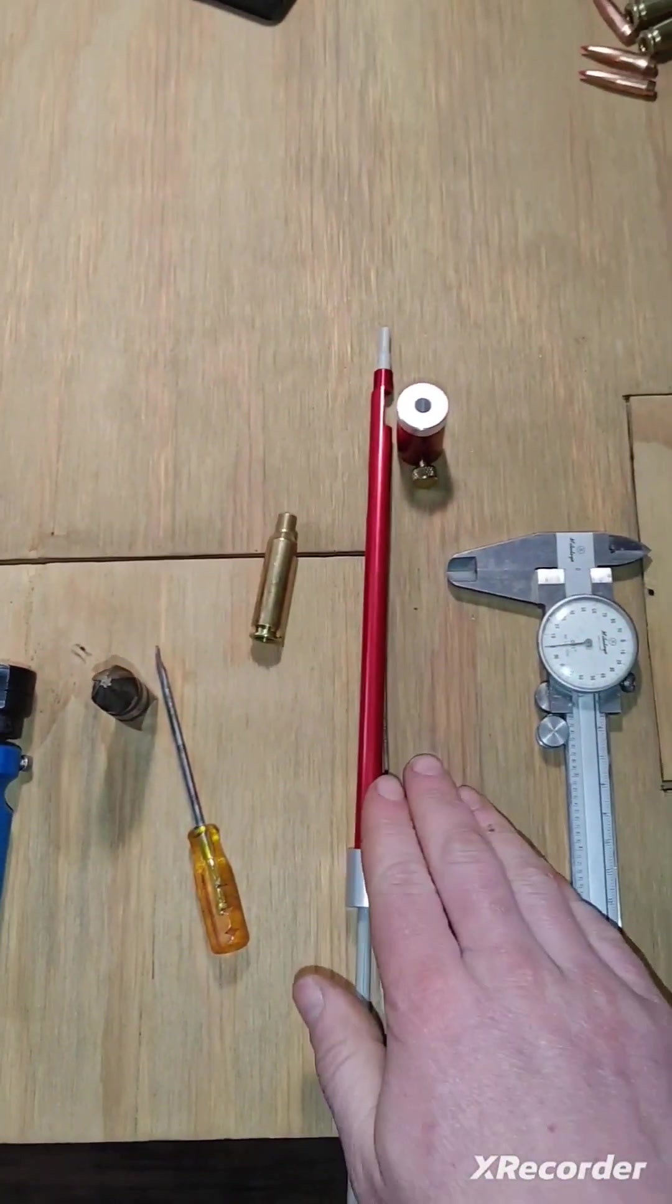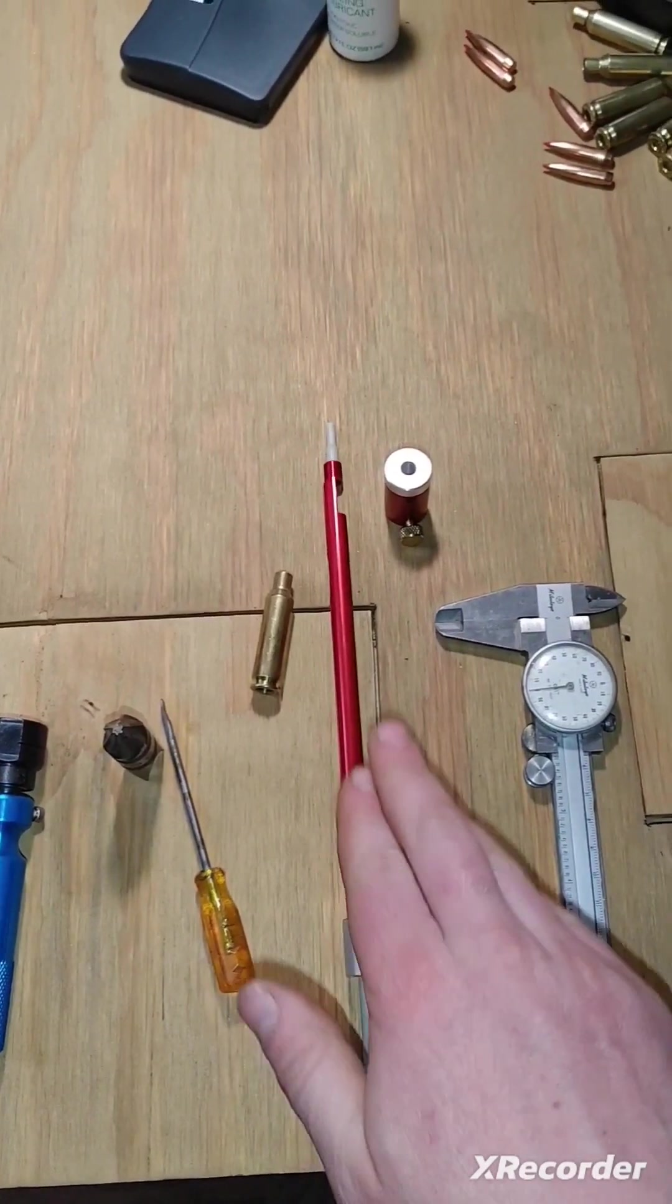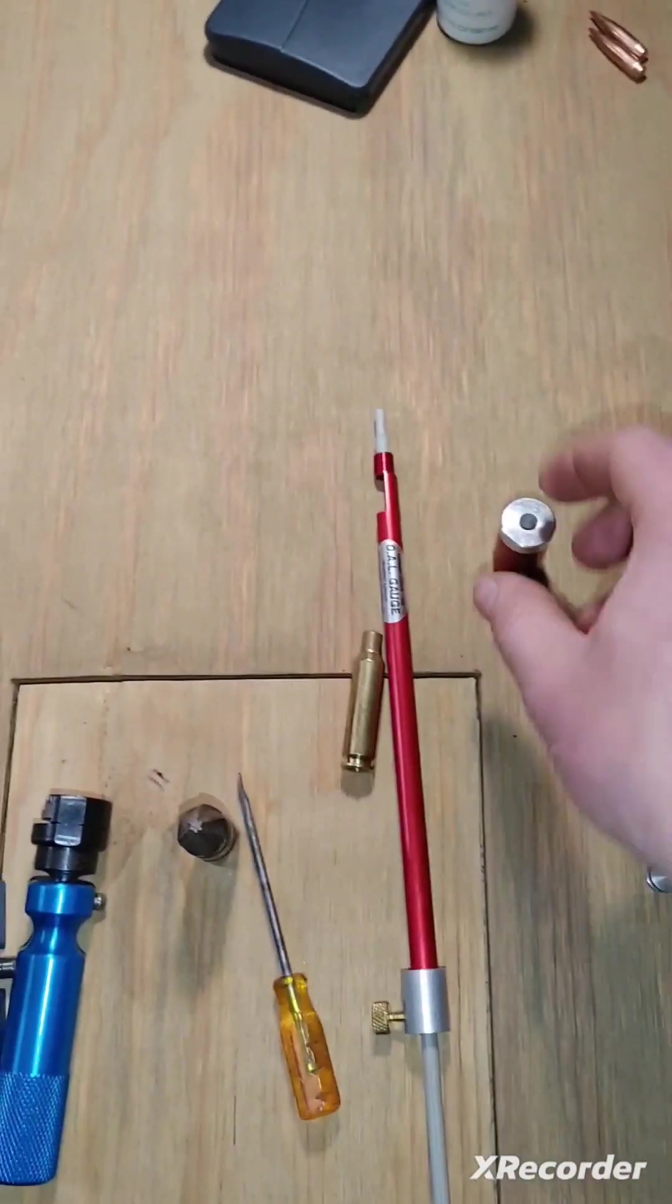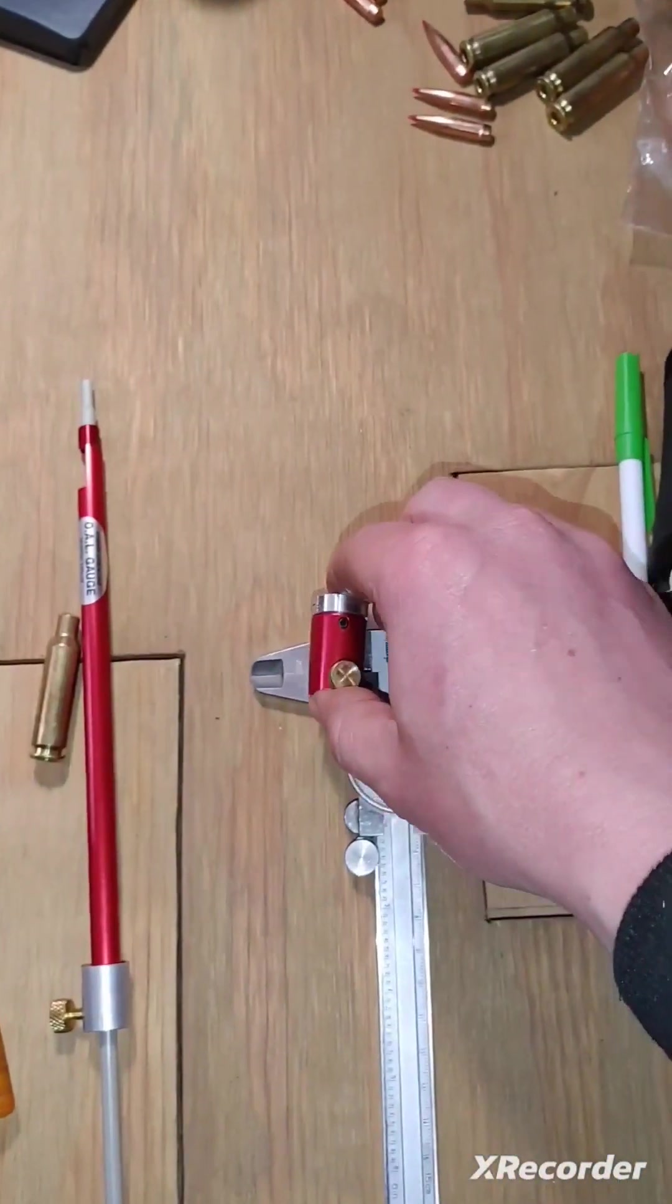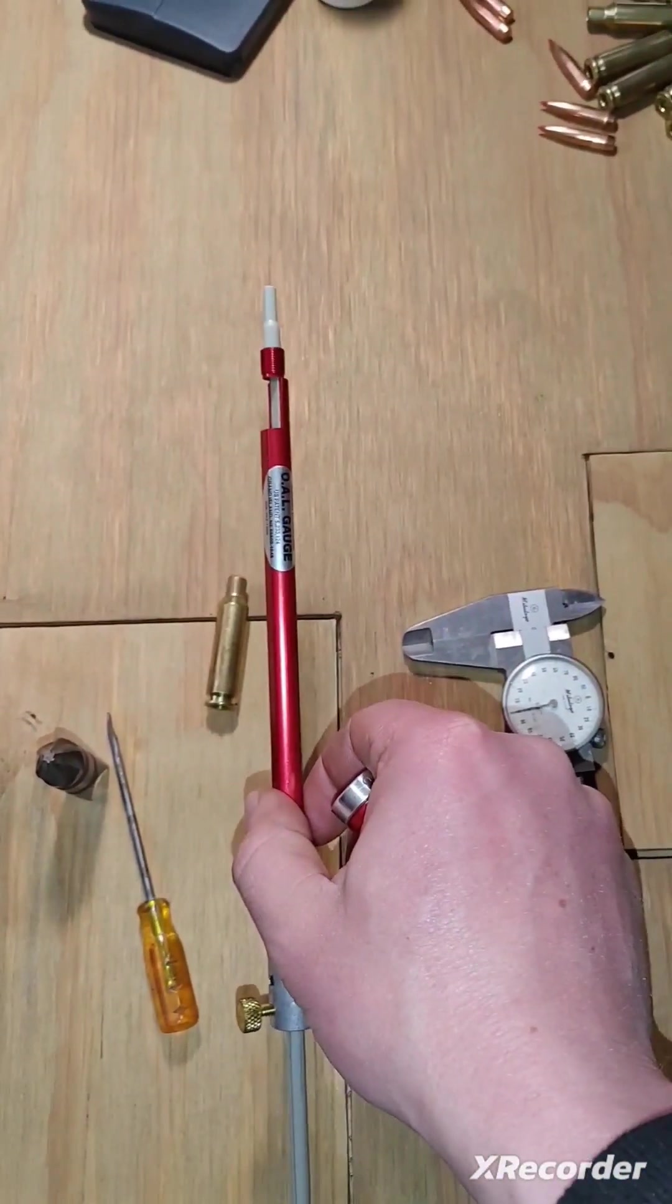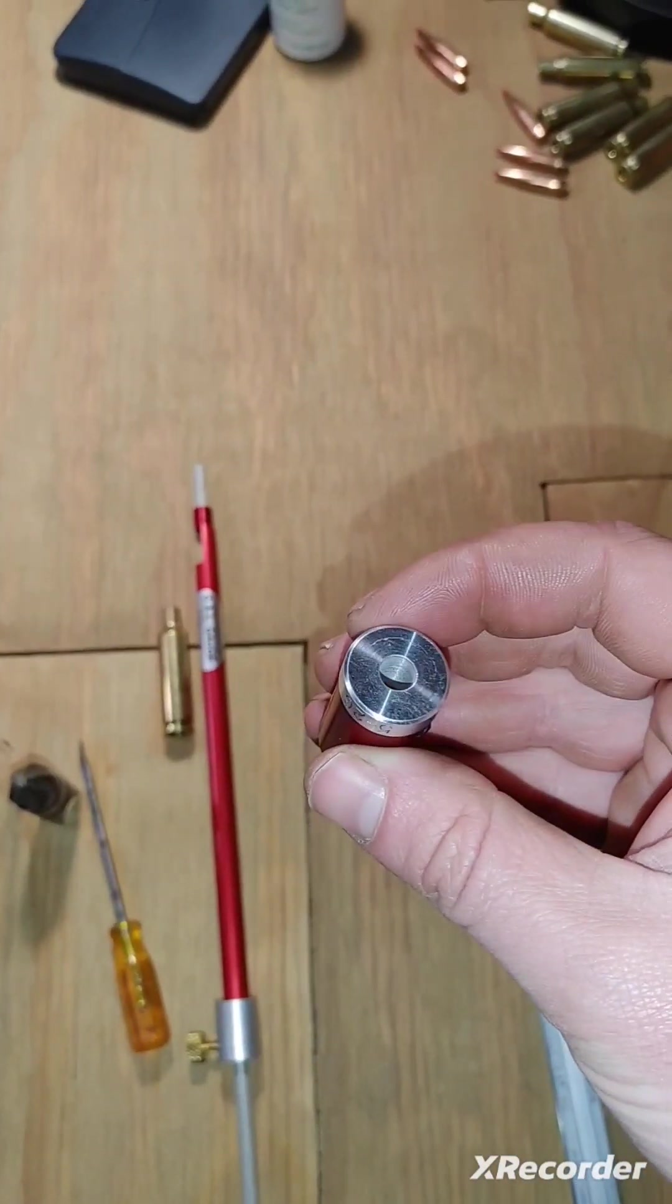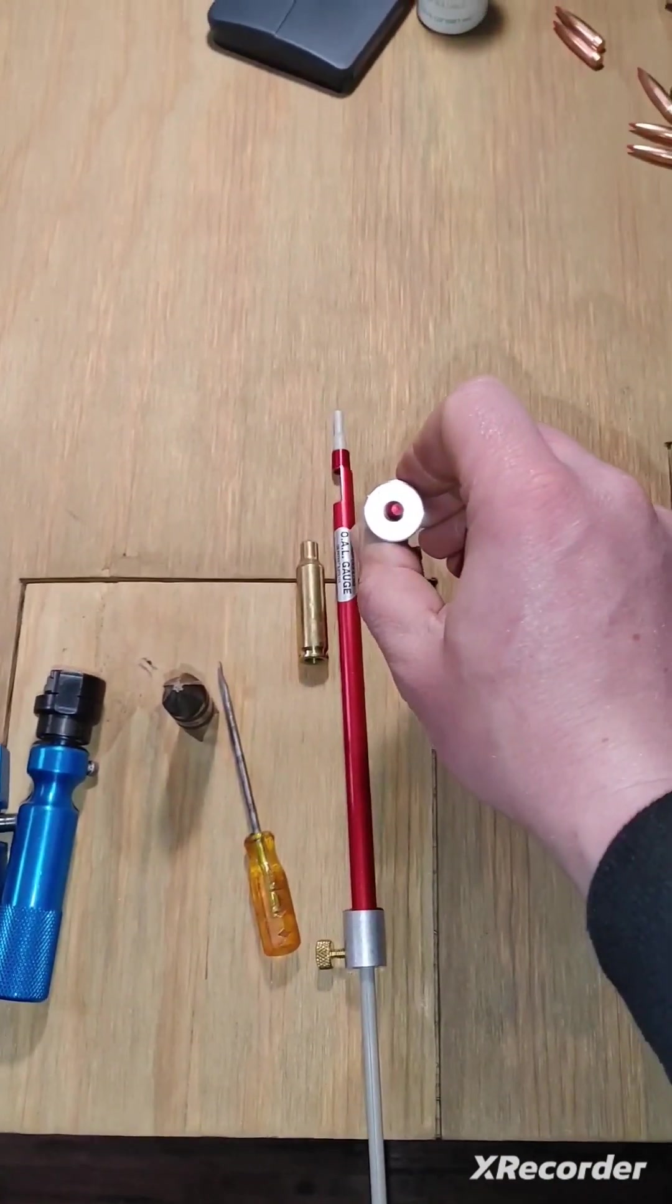They do make ones that are for semi-automatic rifles, pump, or lever action because this will not fit in that style chamber. This is the adapter that goes onto here to measure what the overall length gauge is trying to show you using the bullet ogive. And that's the circumference of the bullet, not the tip.